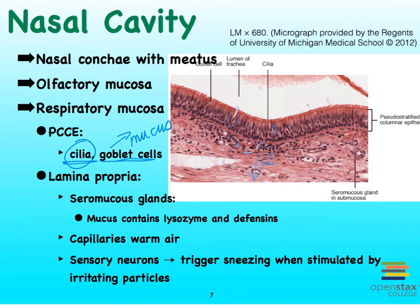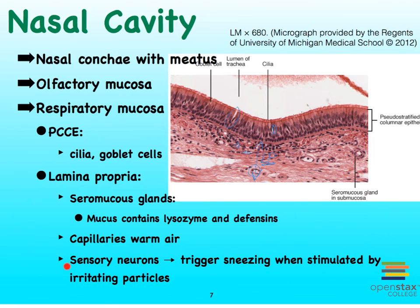Notice too that in the lamina propria, which is mostly areolar connective tissue that may switch over to some dense irregular connective tissue, we have glands that produce a watery serous fluid mixed with some mucus. That secretion is rich in lysozymes and defensins, which go after pathogens that don't belong. The very vascularized lamina propria also helps warm the inhaled air. And let's not forget that afferent or sensory neurons will help us sneeze in the event irritating particles arrive in our nose. So we have many protective mechanisms happening very early on in the respiratory system.